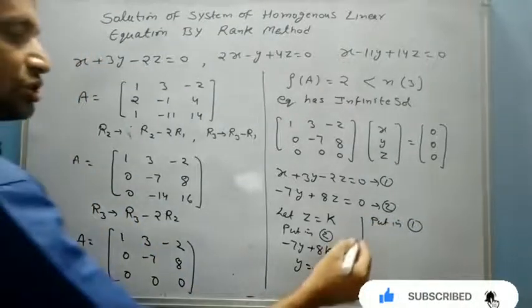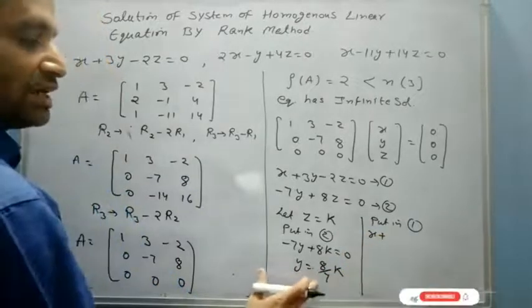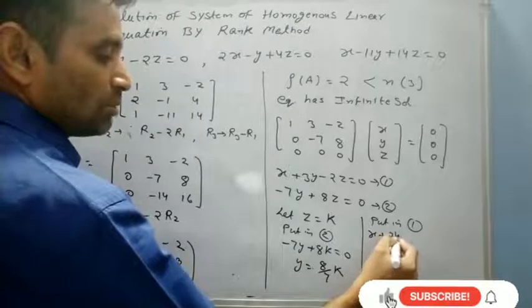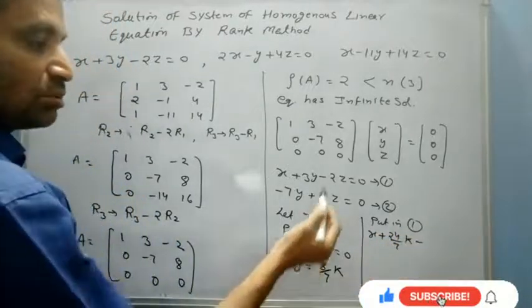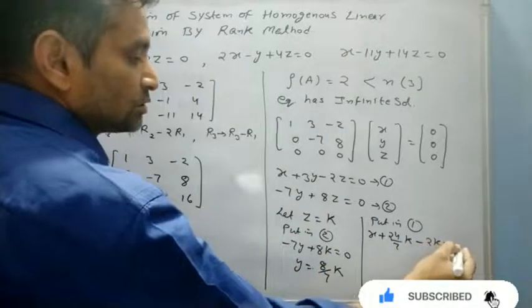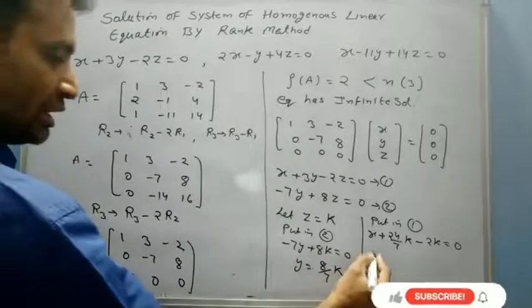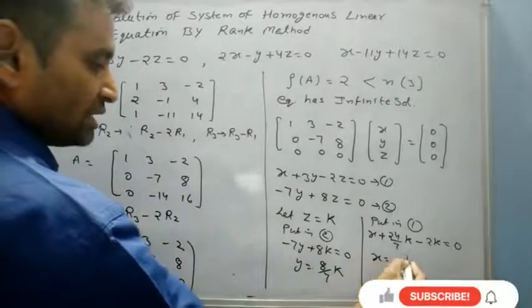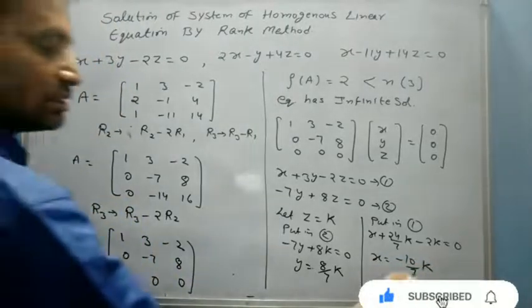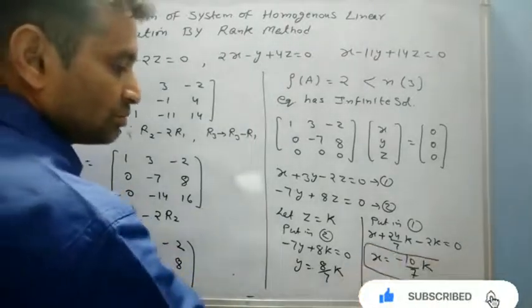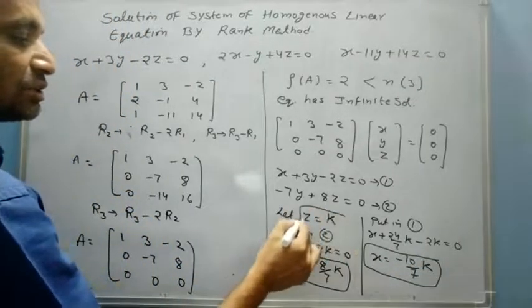Put in equation 1. Now I have x plus when y is put in, that will be 24 upon 7K minus 2K equals 0. After solving, you have the x value, which is minus 10 by 7K. So x equals minus 10 by 7K, y equals 8 by 7K, and z equals K.